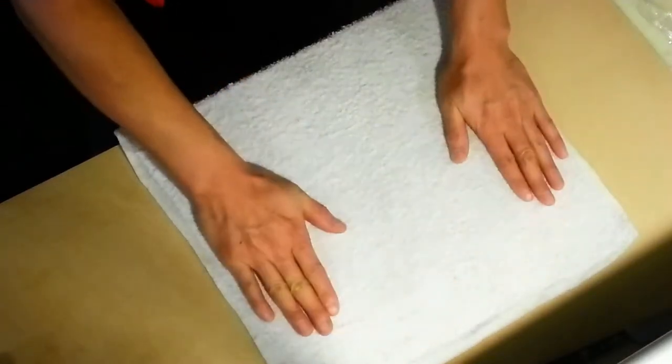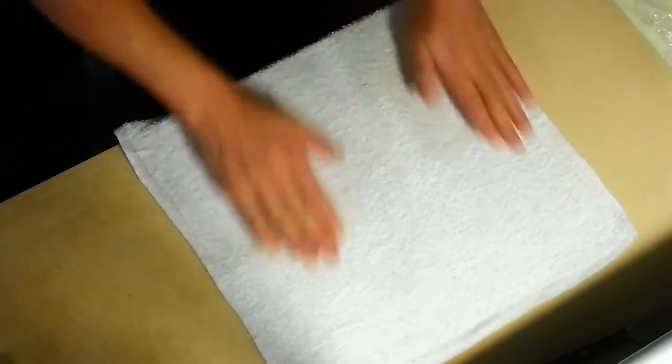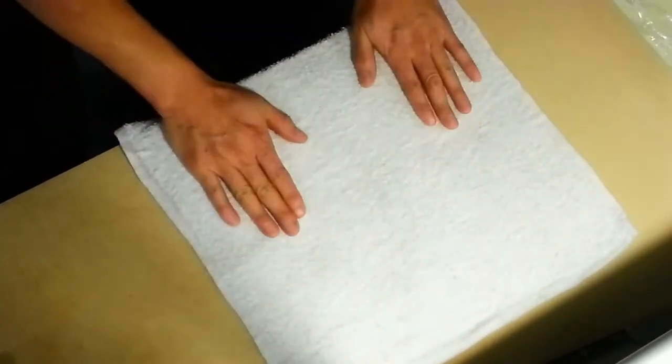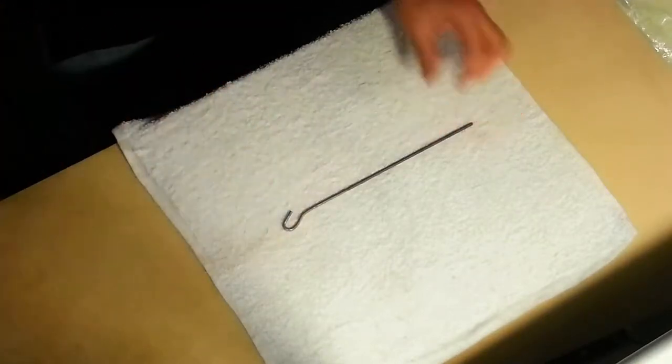Press down on the damp cloth to flatten any pieces of cloth sticking up. It will help prevent the knife from getting caught on the cloth. Lay the metal sticks on the cloth.